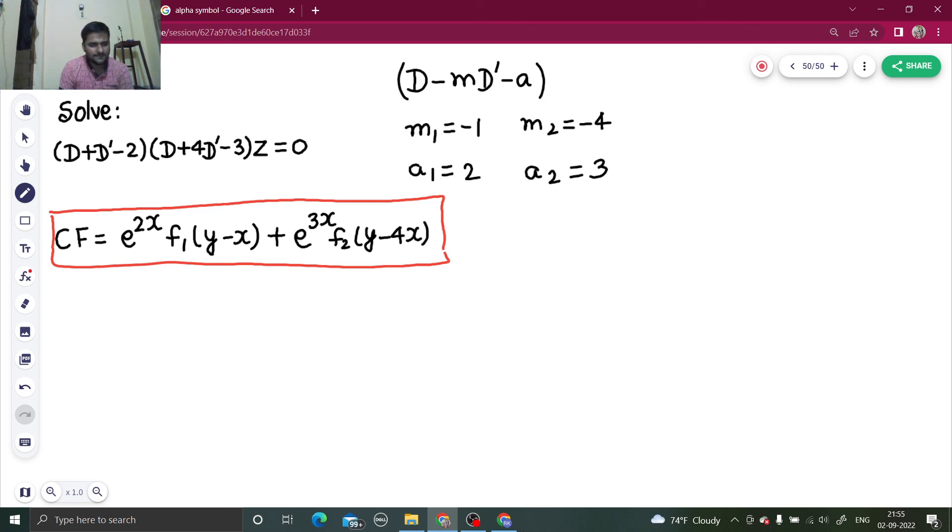Because I have to solve this, z equals CF plus PI. Because PI is 0, RHS is 0, z equals CF will be my final solution. So e power 2x f1(y minus x) plus e power 3x f2(y minus 4x). This is my final solution. I hope you understood this. Thanks and have a nice day. Do watch my partial differential equation playlist for more such videos.